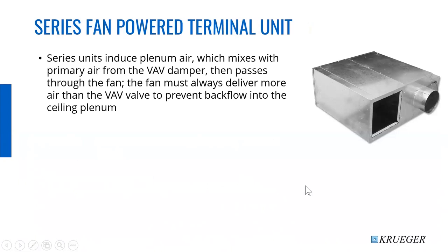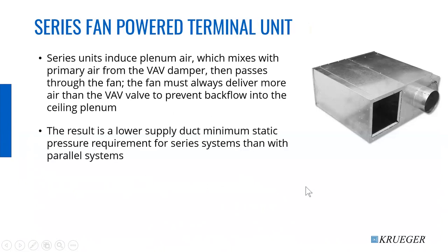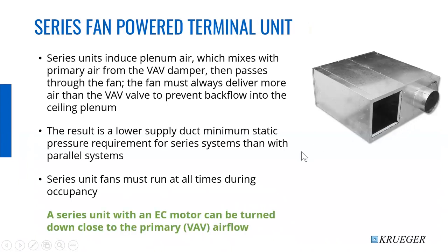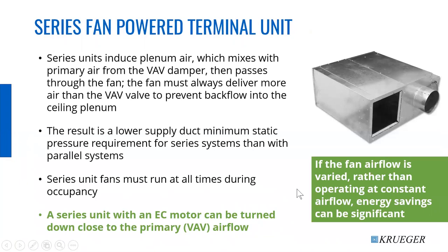The series box mixes plenum air with primary air, and the fan is on the discharge. The fan must always deliver more air than the VAV valve supplies to prevent backflow. The result is much lower duct static pressures supplying a series box than a parallel box — typically an inch less pressure, which means an inch less leakage and an inch less energy at the central fan. Remember, there's a cube function for static pressure at the central fan, so it's a big deal. But the fan has to run all the time in a series box — which leads to the discussion of electrically commutated motors, where a series box with an ECM can be turned down very close to primary airflow.